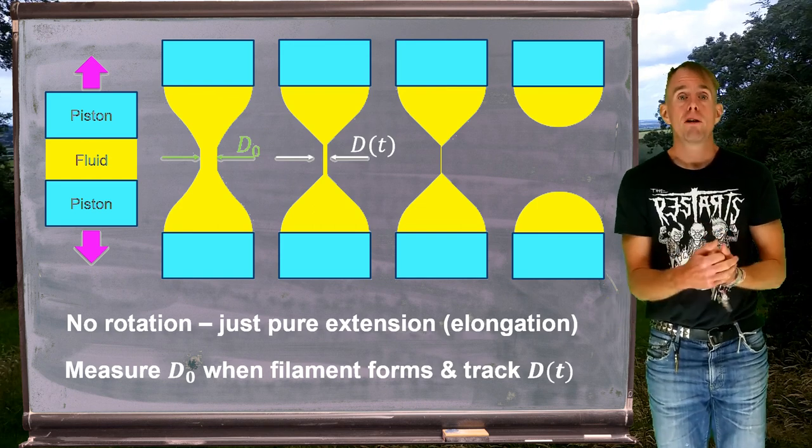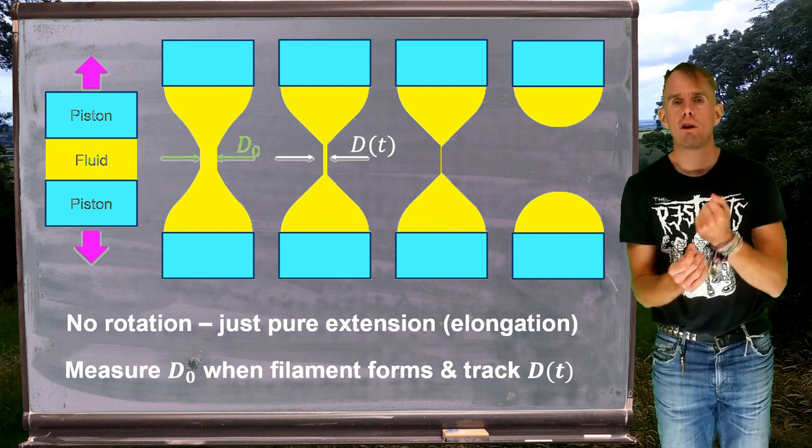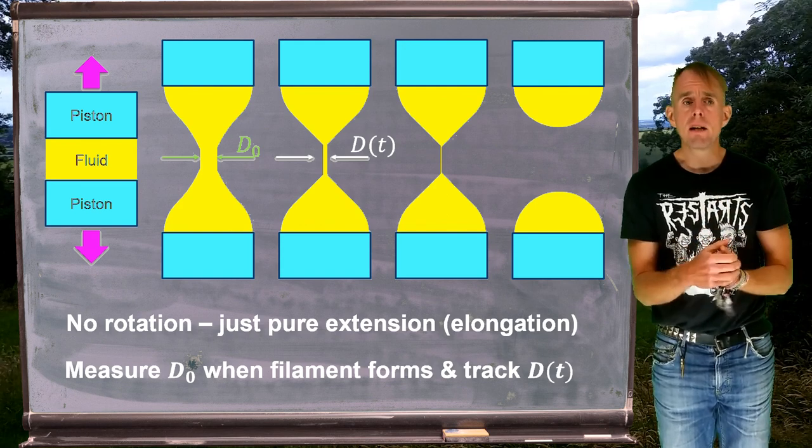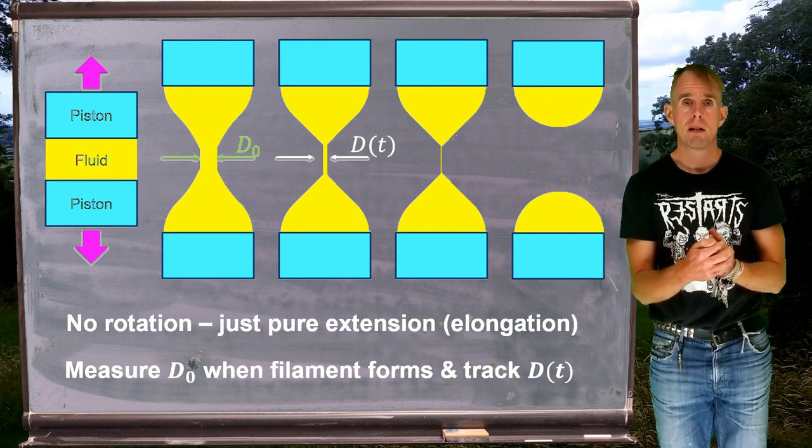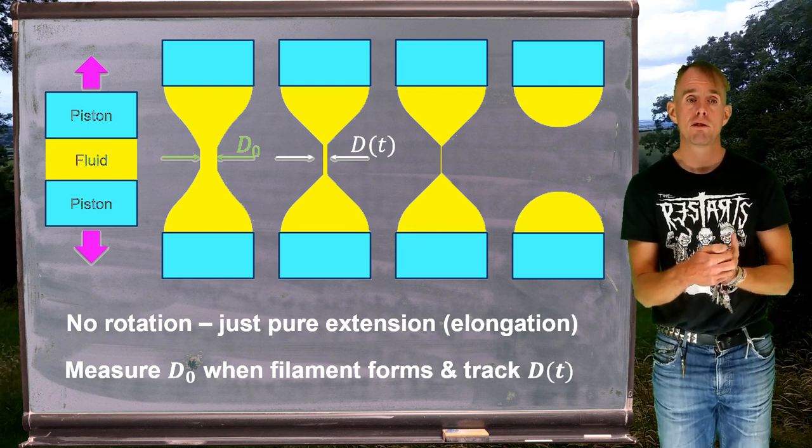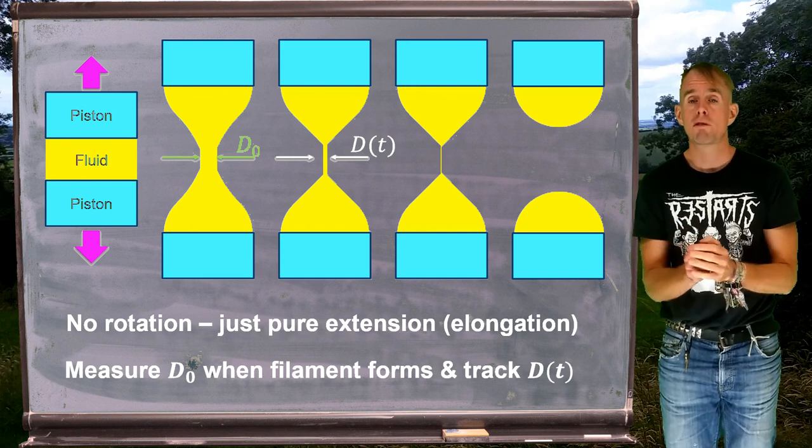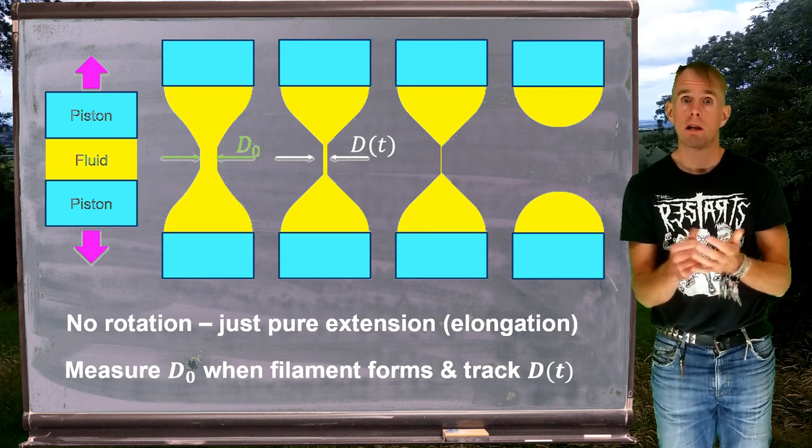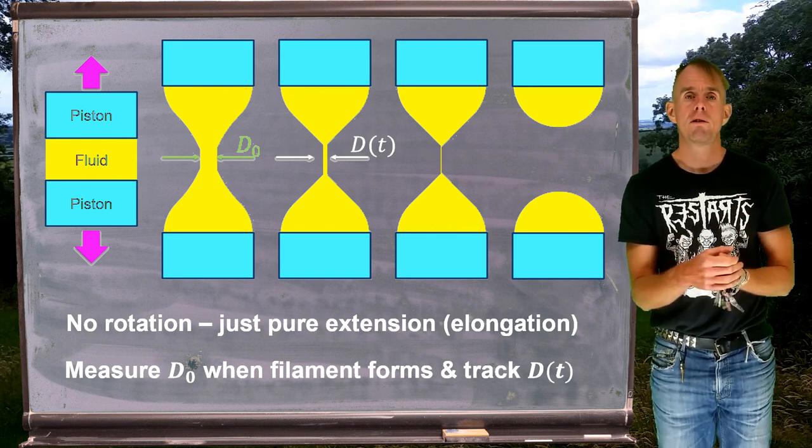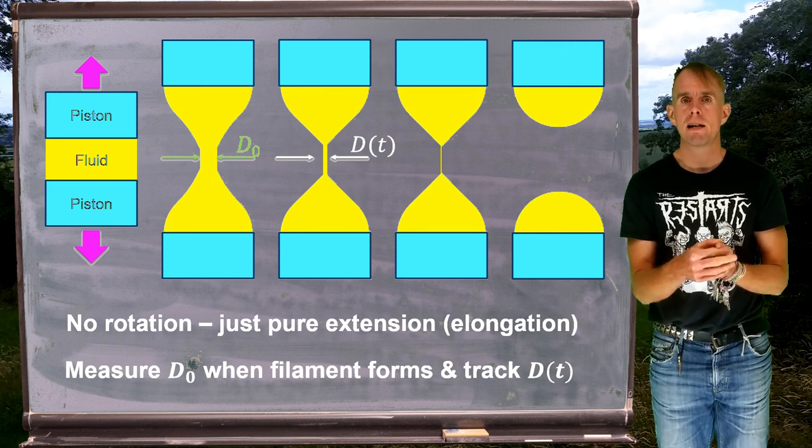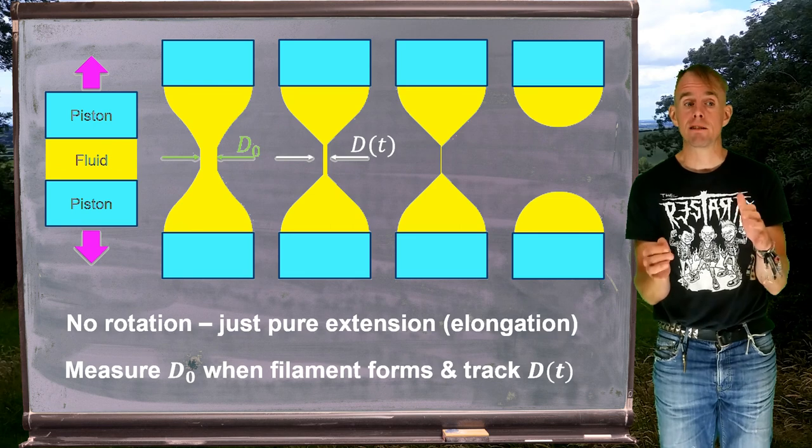So we have a flow field that is purely extensional. We have an experimental measurement that now relies on optical techniques. Early capillary breakup rheometers used to use laser micrometers to measure diameter as a function of time. Nowadays, we can use high speed cameras and depending on the nature of the fluid, sometimes we can get away with nice inexpensive solid state high speed cameras, which will give five, six, seven hundred frames per second. For low viscosity liquids, we need very high frame rate cameras, maybe 10,000 to 50,000 frames per second in order to get enough data to understand what's going on.